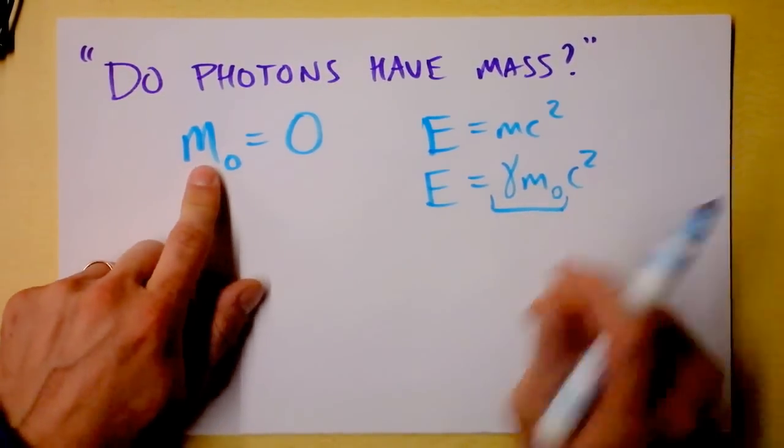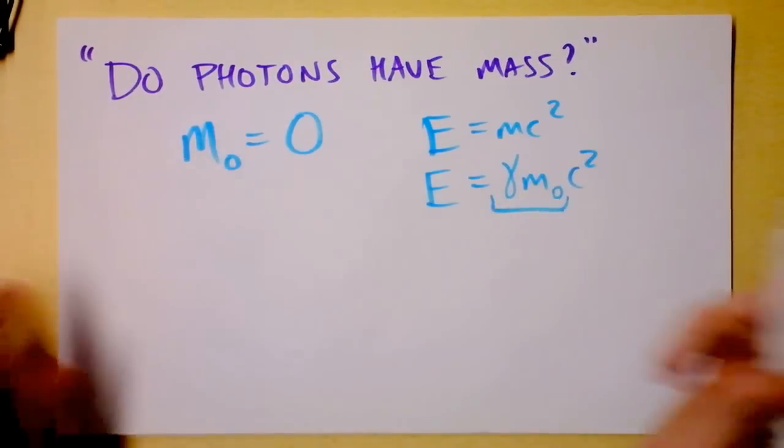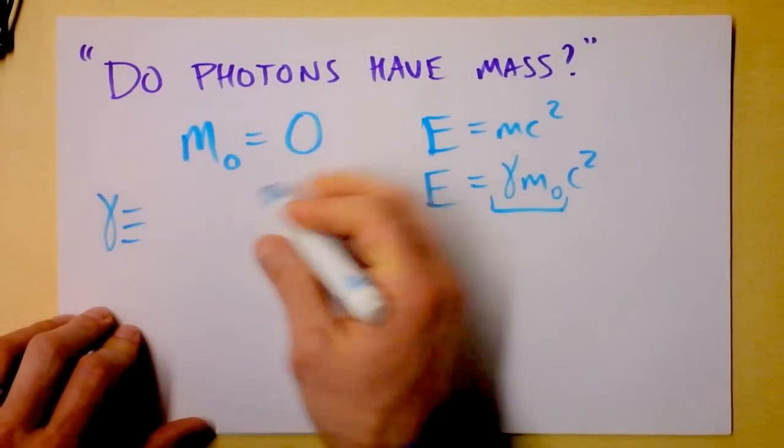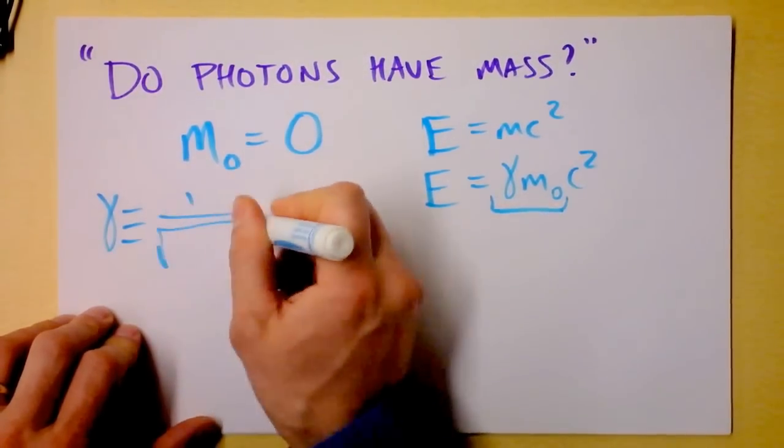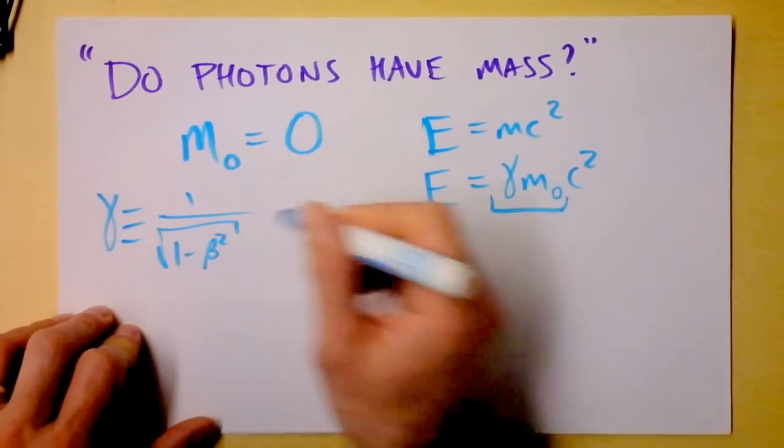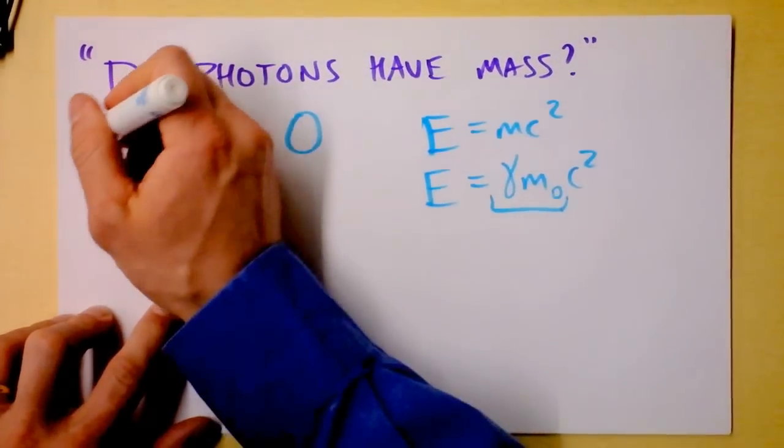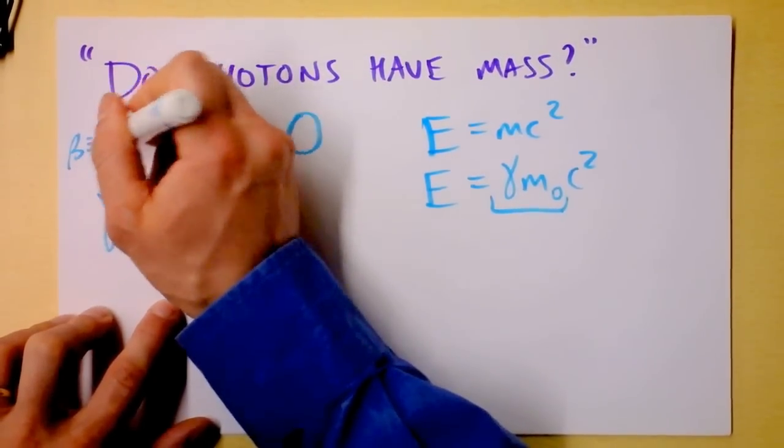So, a photon has a rest mass of zero, but a gamma of infinity. Remember, gamma is this relationship right here. It's one over the square root of one minus beta squared, and we got beta defined to be V over C.